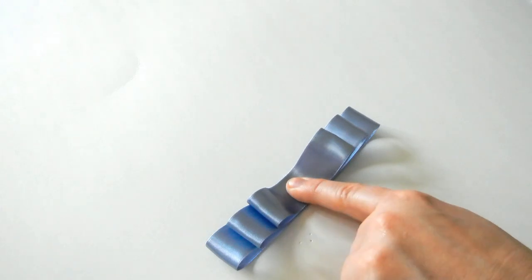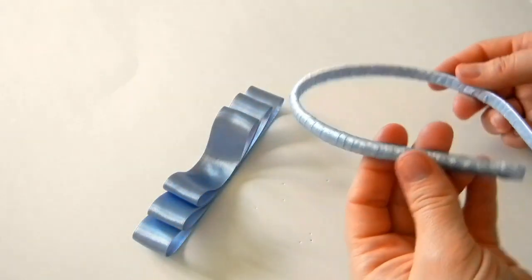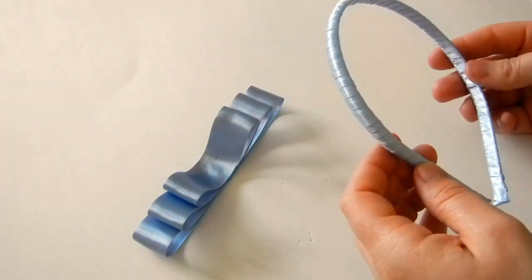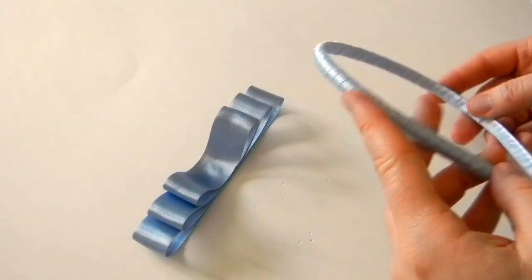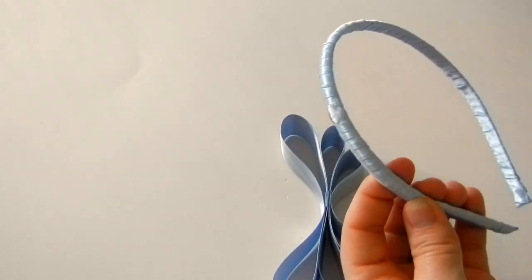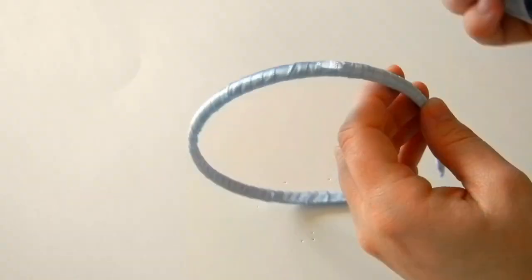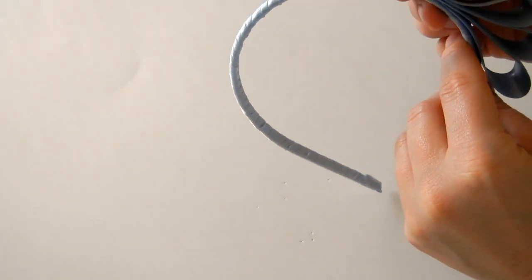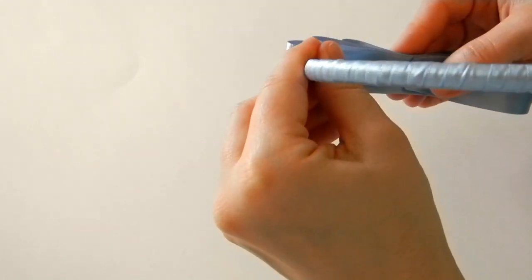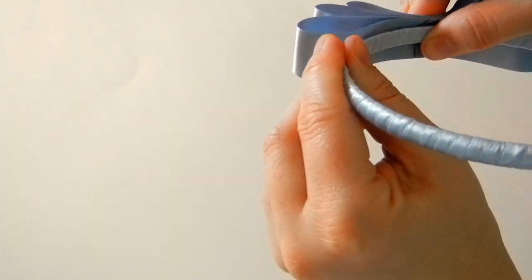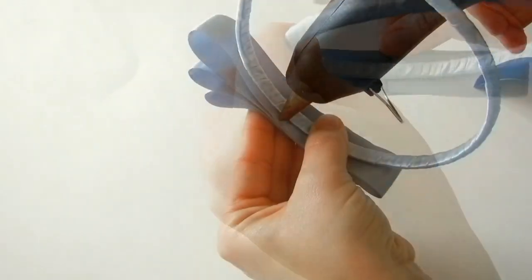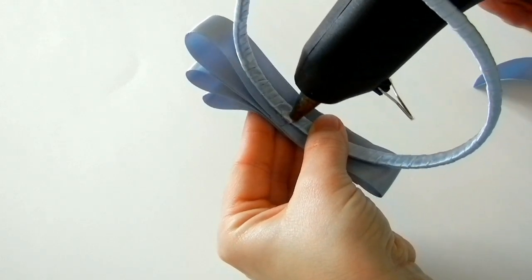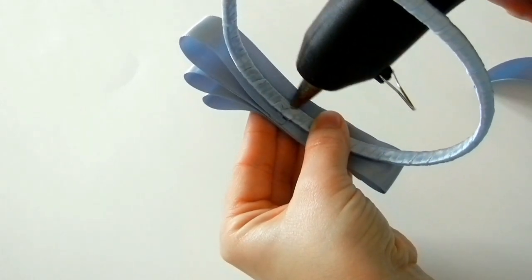Now we're going to add it to our headband. This is also lined with three-eighths of an inch satin ribbon. Add it to our headband and then place the center of the bow. Place glue on the back.